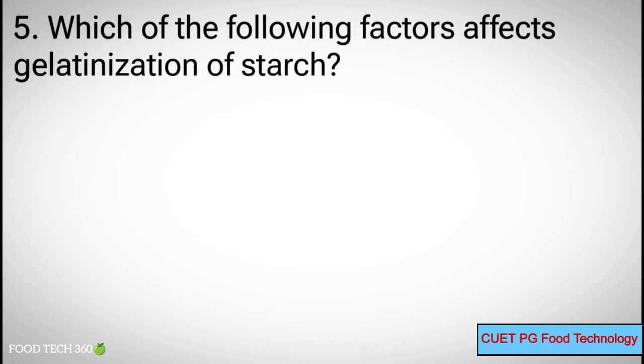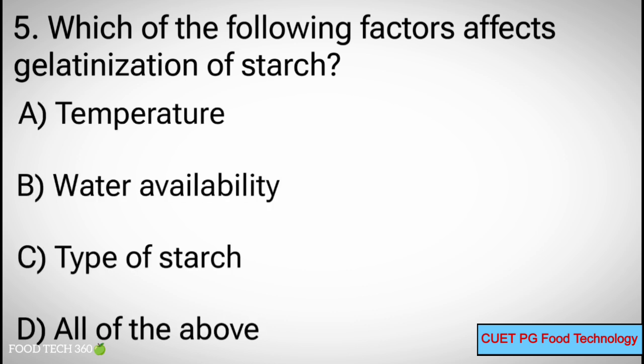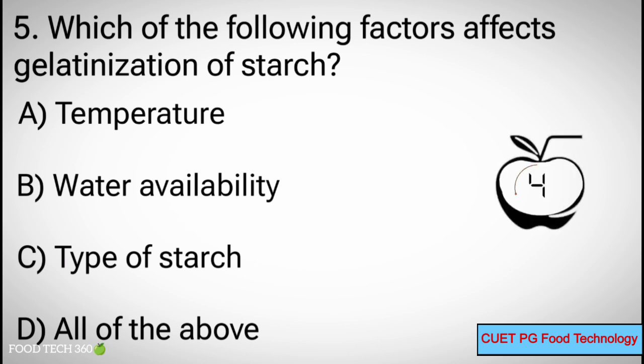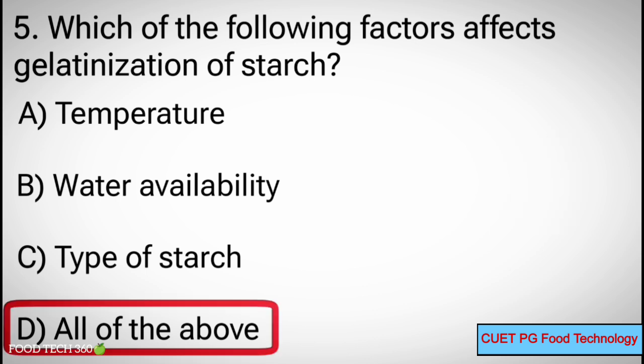Question number 5: Which of the following factors affects gelatinization of starch? Options: A. Temperature, B. Water availability, C. Type of starch, D. All of the above. Correct answer: D. All of the above.